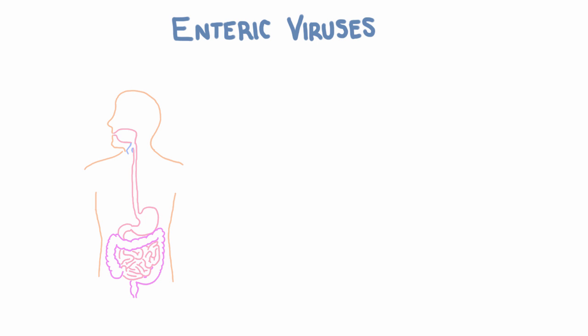So let's think about what that means in terms of transmission. Things in the GI tract travel from top to bottom, so that means with an enteric virus, you get infected through your mouth and then shed the virus to infect someone else through your feces. We say it has fecal-oral transmission — the virus has to get from one person's feces to another person's oral cavity. This usually happens via direct contact, food, or via fomites — objects that the virus can sit on.